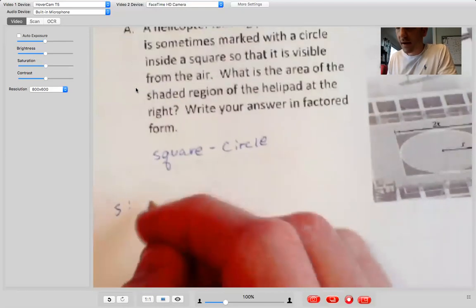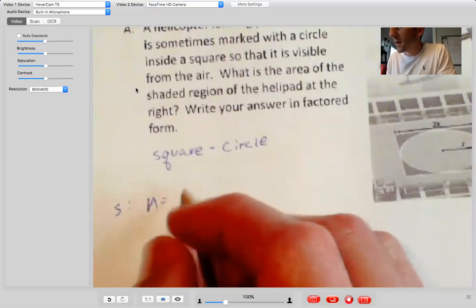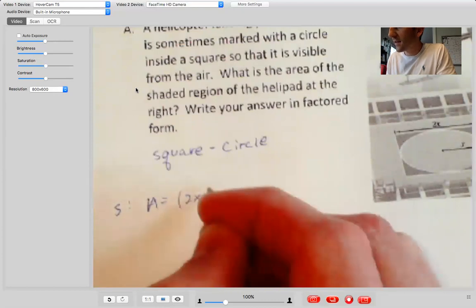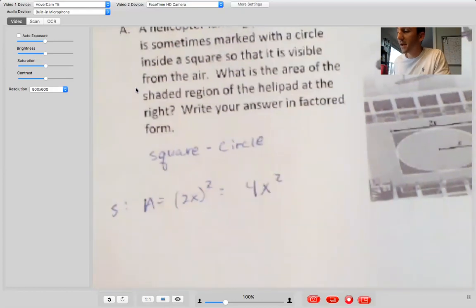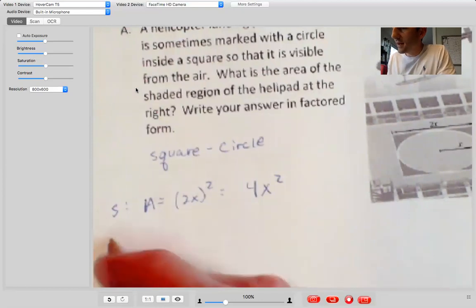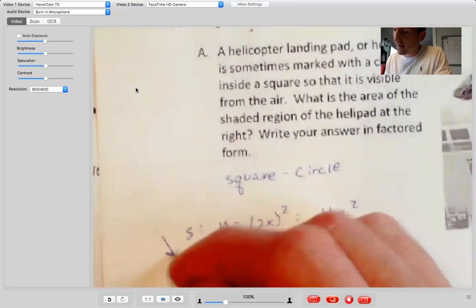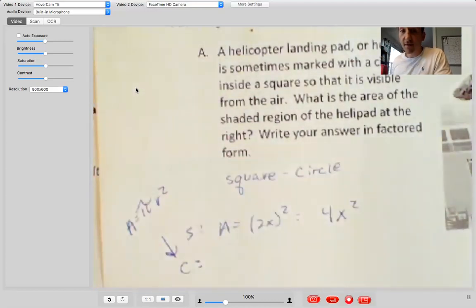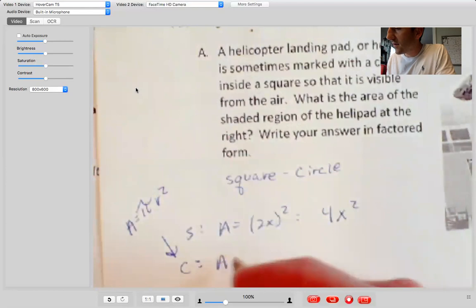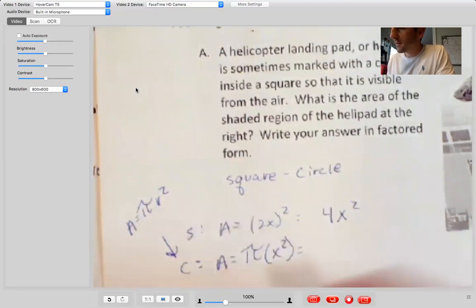That's our strategy square minus circle. Okay. So the square is going to be pretty easy. Put S for square. And then the area is just length times width or side length squared. Side length is two X. So that's going to be four X squared. Okay. And then the area of my circle, here's where it gets a little bit more complicated. Circle is area equals pi times radius squared. Okay. We know that from the past.